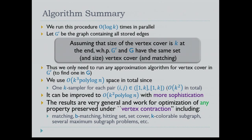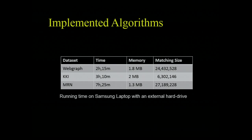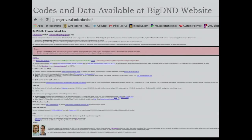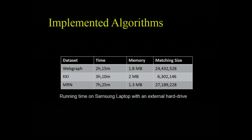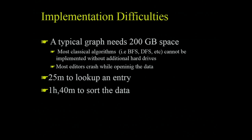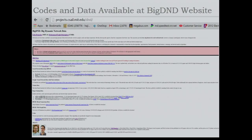We have actually implemented some of these algorithms on real large graphs. For brain graphs with up to two billion edges and 34 million nodes, we obtained very reasonable memory usage and running time. Some of these datasets take 25 minutes just to read through, or about 40 minutes to sort the edges. These algorithms and datasets are available on the big DND website, where we are collecting dynamic network datasets and crediting the data providers.